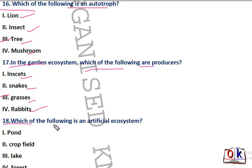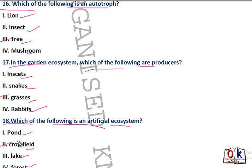Question number 18: which of the following is an artificial ecosystem? Options are pond, crop field, lake, or forest. Very simple — crop field will be the right answer.